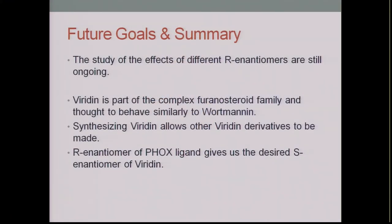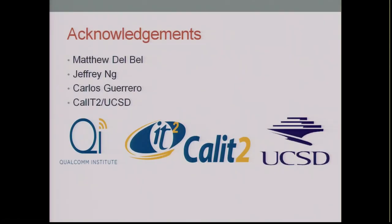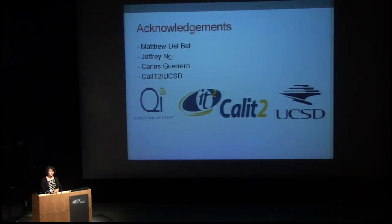As future goals, the study of the effects of different R enantiomers is ongoing — we're synthesizing different R enantiomers with bulky groups to determine higher enantiomer selectivity. In summary, viridin is part of the complex furanosteroid family and is thought to behave similarly to Wortmannin. Synthesizing viridin allows us to create viridin derivatives using convergent synthesis, and the R enantiomer of the Fox ligand gives us the desired S enantiomer of viridin. I'd like to thank Matthew DelBell, Jeffrey Ng, and Carlos Guerrero for their assistance, and Cal IT2 and UCSD for this opportunity. Thank you — feel free to ask questions.